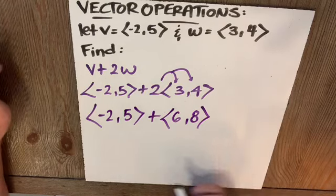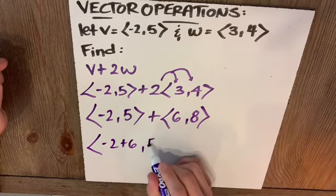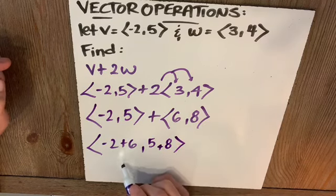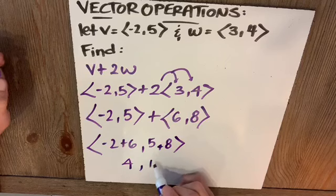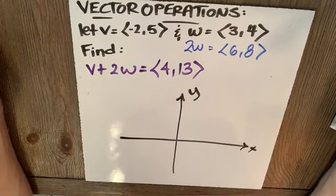Remember, vector addition is as simple as X component plus X component, comma, Y component, plus Y component, to give us 4, comma, 13. That is my resultant vector. So what's going on here geometrically?